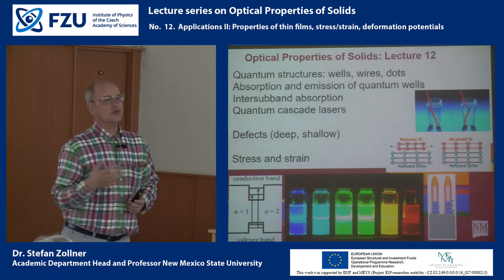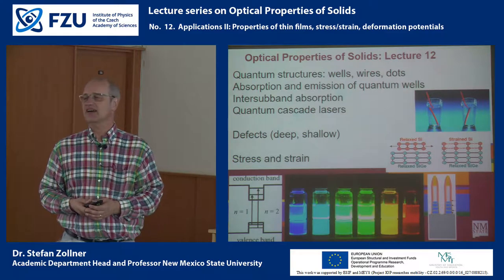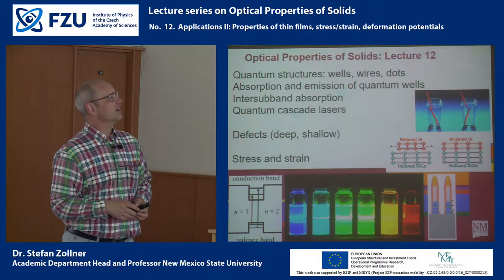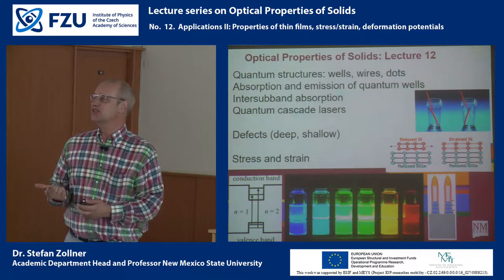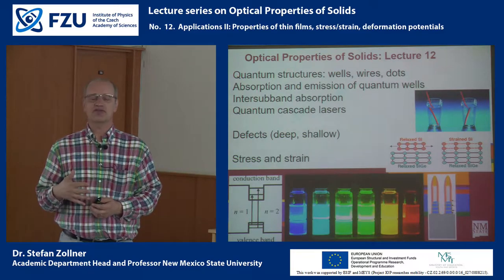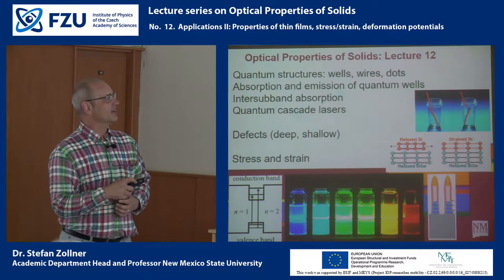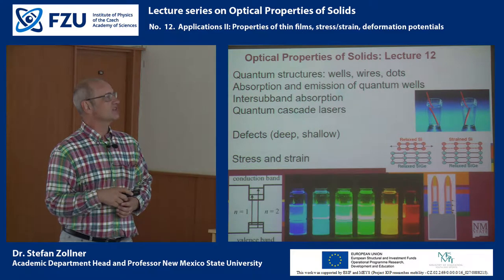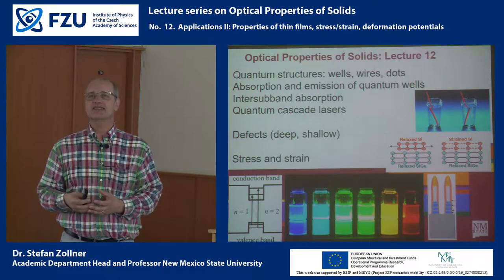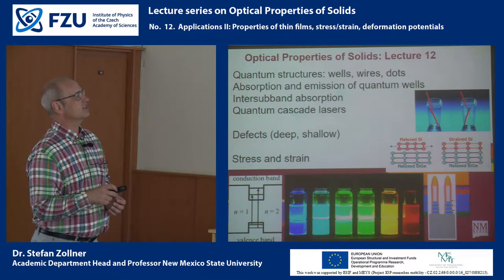One request had to do with nanostructures and their optical properties — we already started with that in the last lecture and I will continue today. The second request had to do with defects such as titanium in sapphire, so I'll have a few slides about defects. Finally, at the very end, one topic I'm very interested in is stress and strain in nanostructures, which changes their optical properties.